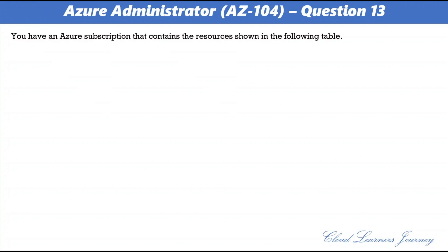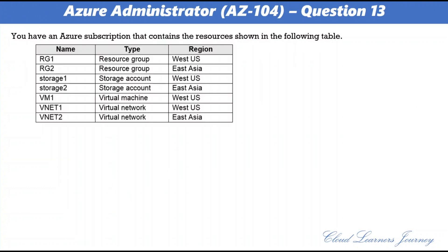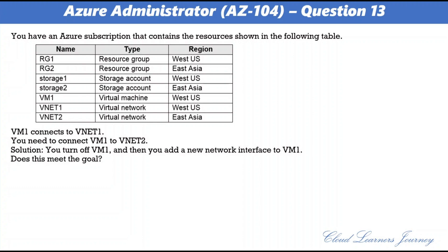Question 13. You have an Azure subscription containing resources including VM1 and VNet1 and VNet2. VM1 connects to VNet1. You need to connect VM1 to VNet2. The proposed solution is: turn off VM1 and then add a new network interface to VM1. The correct answer is B. No. Even though VM1 is turned off, it still connects to VNet1, and a resource cannot span two VNets. You must first delete VM1, then recreate VM1, and after that add the network interface for VM1 connected to VNet2.